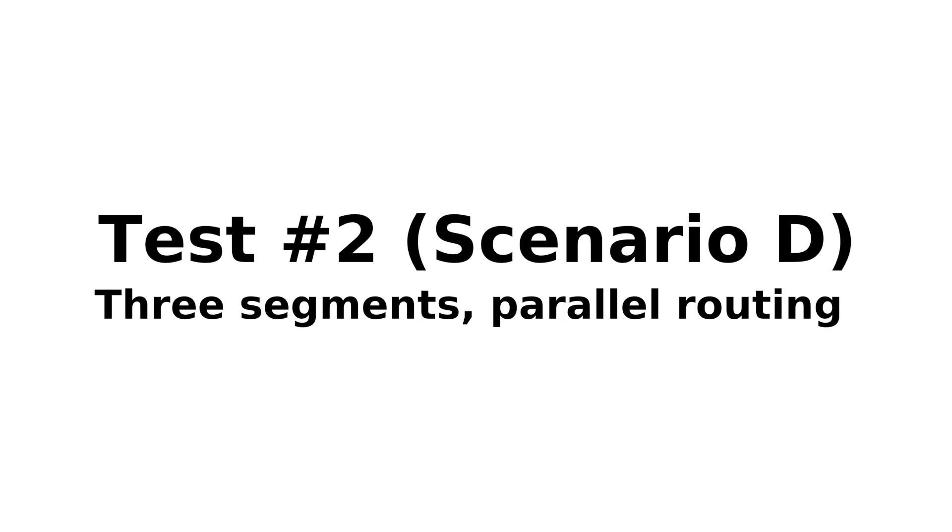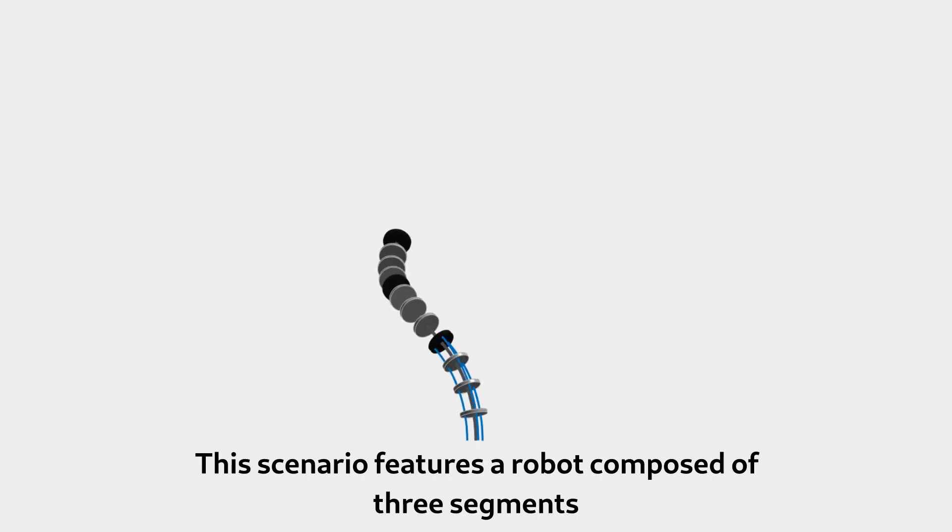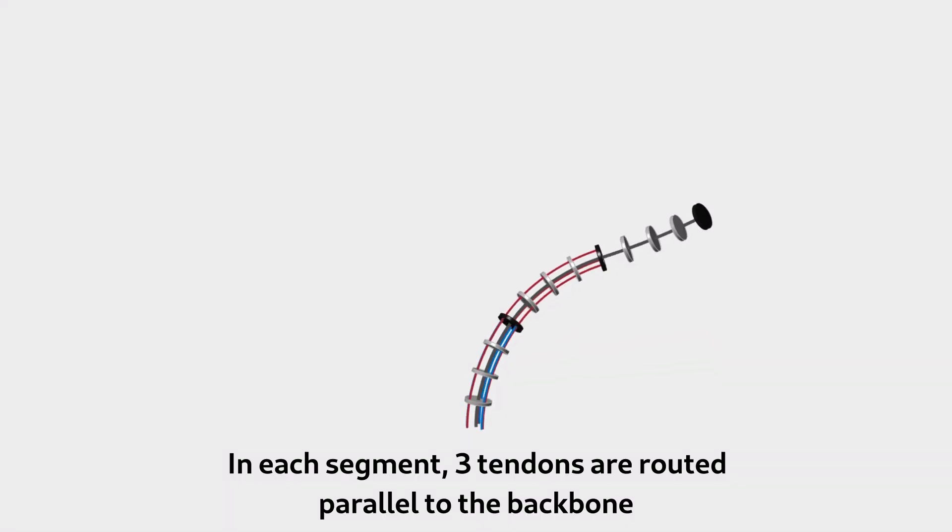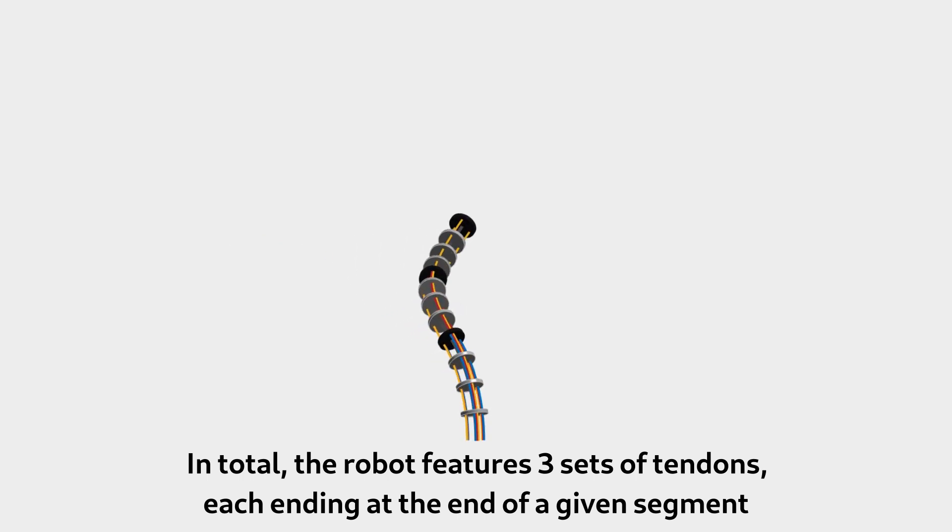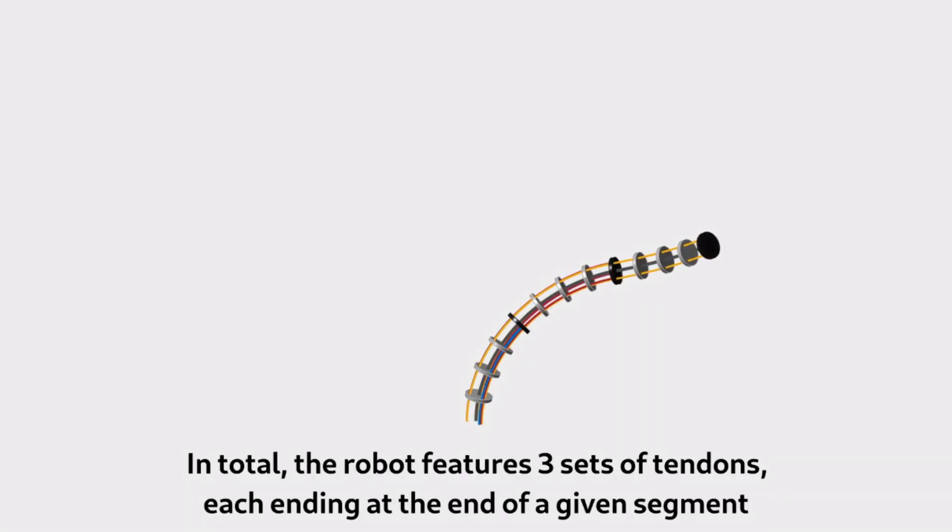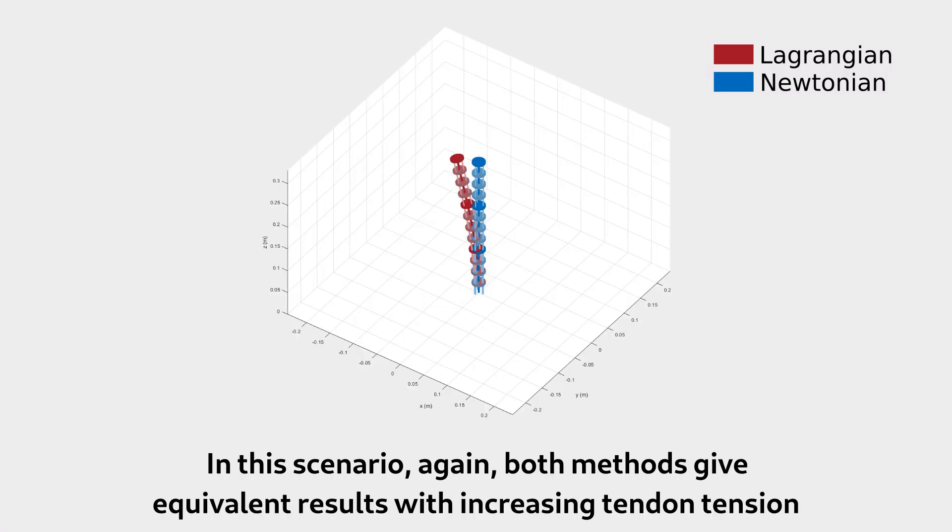Test 2, Scenario D: This scenario features a robot composed of three segments. In each segment, three tendons are routed parallel to the backbone. In total, the robot features three sets of tendons, each ending at the end of a given segment. In this scenario, again, both methods give equivalent results with increasing tendon tension.